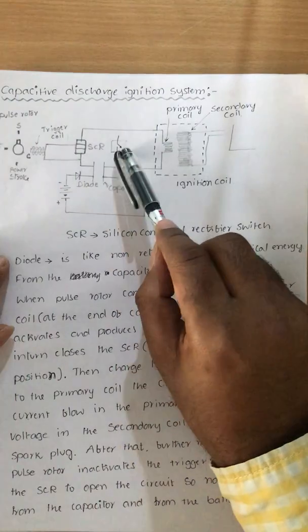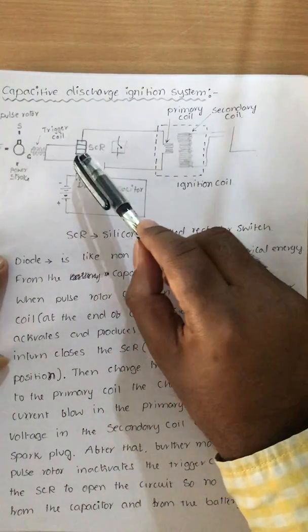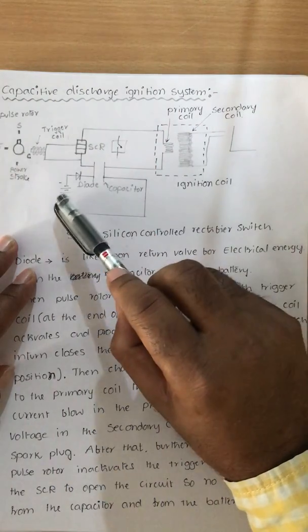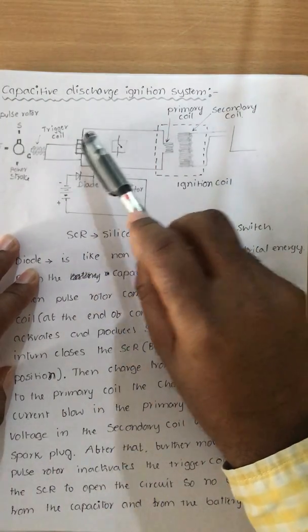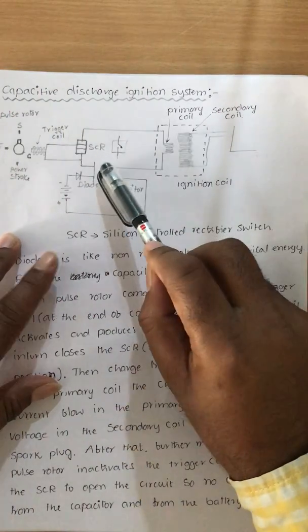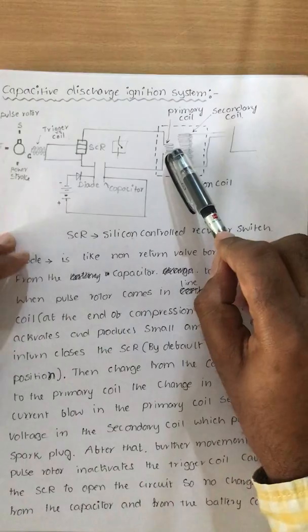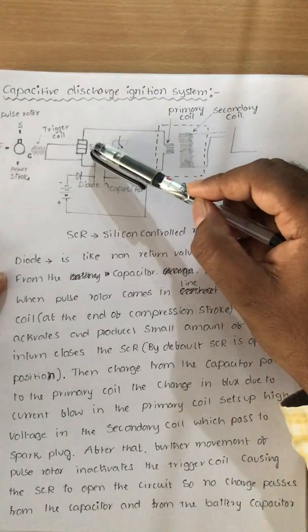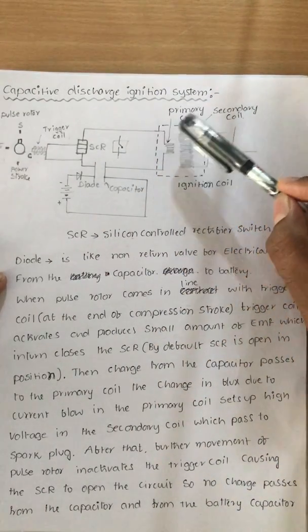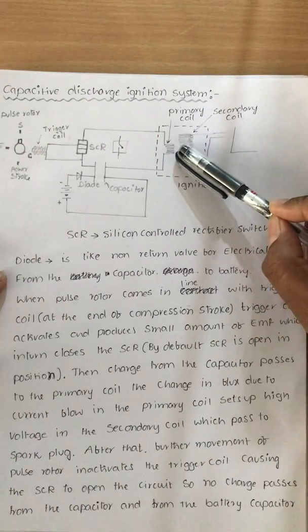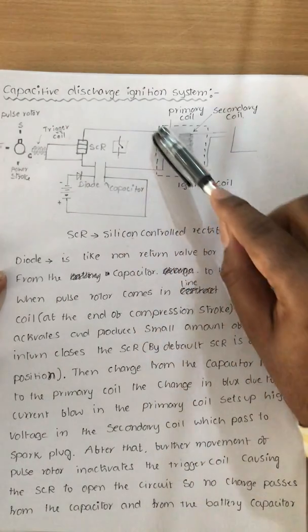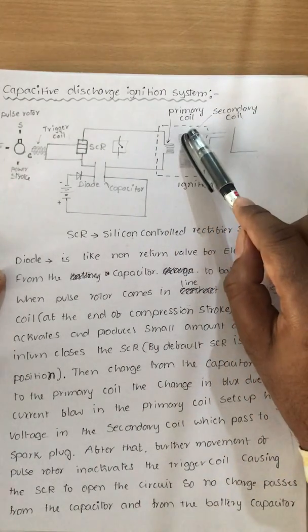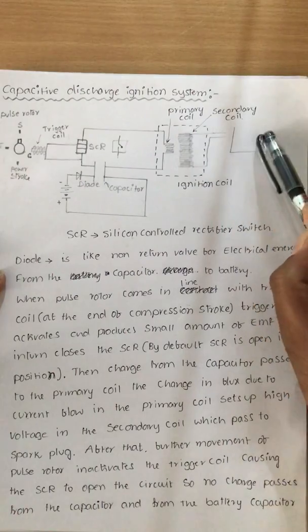The SCR is normally open; supplying a small current closes it. The moment the SCR closes, the circuit is complete, and the capacitor — which was already charged by the battery — discharges current into the primary coil. The change in flux due to current flow in the primary coil induces a high voltage in the secondary coil. This high voltage is then supplied to the spark plug in the combustion chamber.